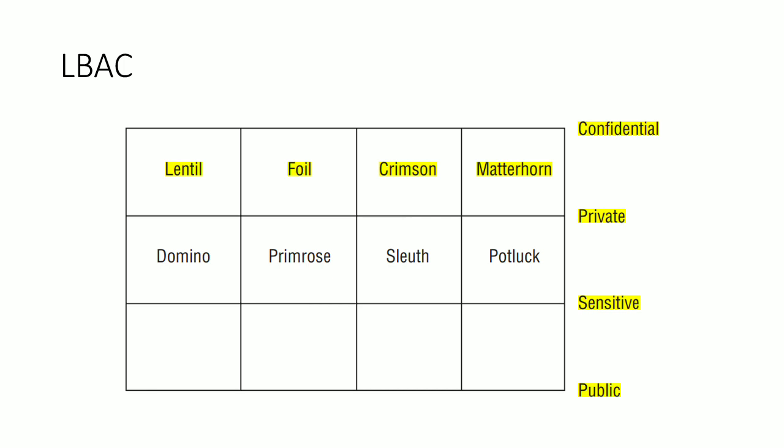Here is an example of a lattice-based access control model with four classes: public, sensitive, private, and confidential, where confidential is the most secure. Within confidential there are further subcategories or compartments. To access one of these compartments, you need clearance up to the confidential level and need-to-know for that specific compartment. The classes at lower sensitivity levels do not have any compartments.